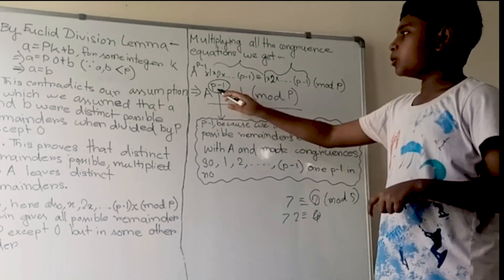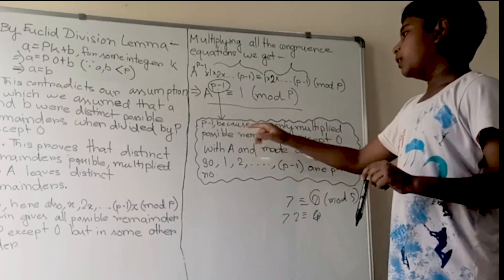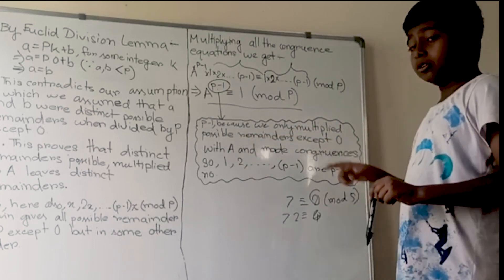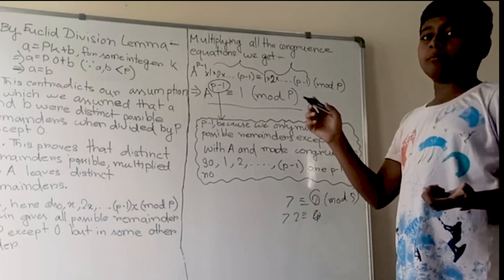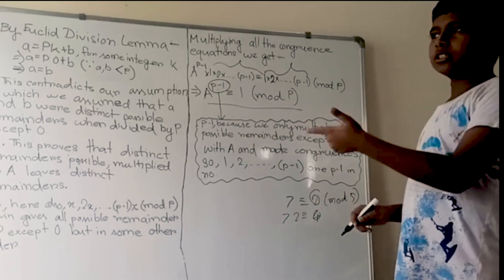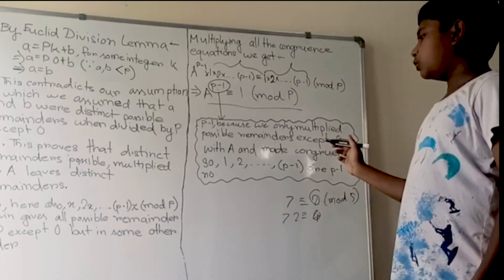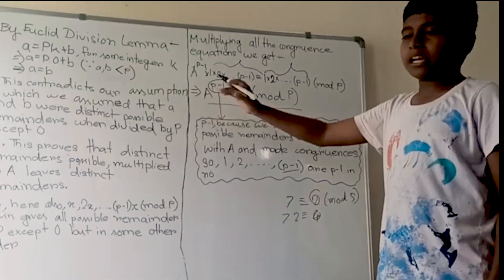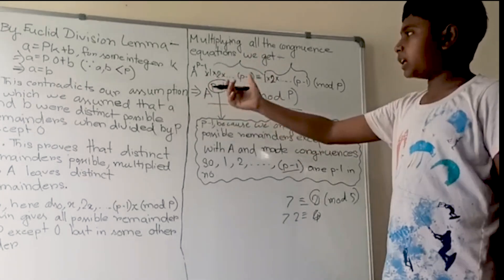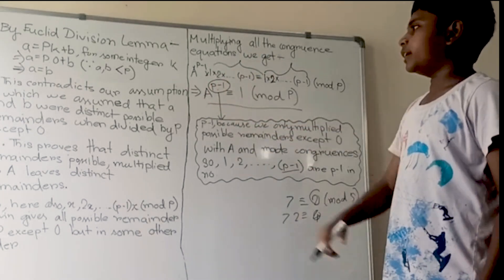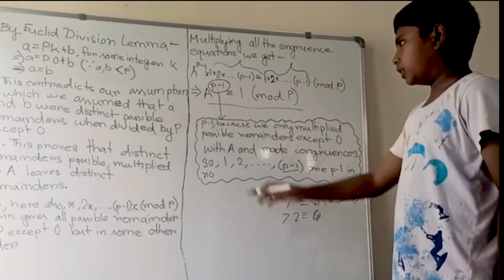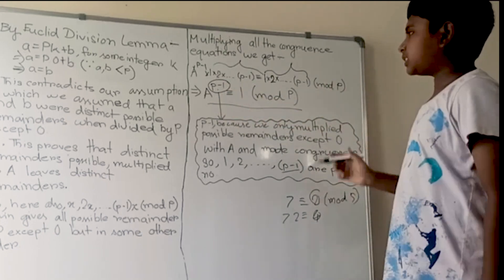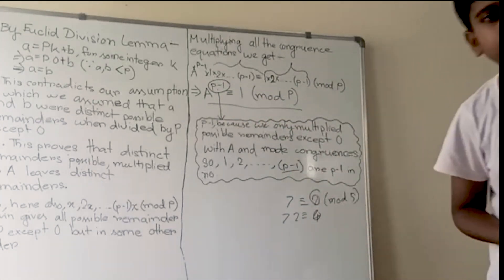Since the product 1·2·3·...·(p−1) appears on both sides, we can cancel it out. This gives us a^(p−1) ≡ 1 mod p. We used p−1 because we multiplied possible remainders excluding 0, giving p−1 numbers, so a appeared p−1 times and went into the exponent. Hence Fermat's Little Theorem is proved. Thank you.